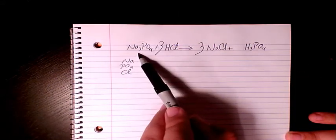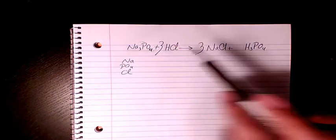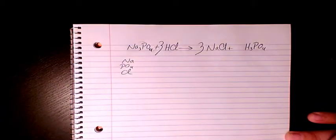So one mole of sodium phosphate plus three moles of hydrochloric acid gives three moles of sodium chloride and one mole of phosphoric acid.